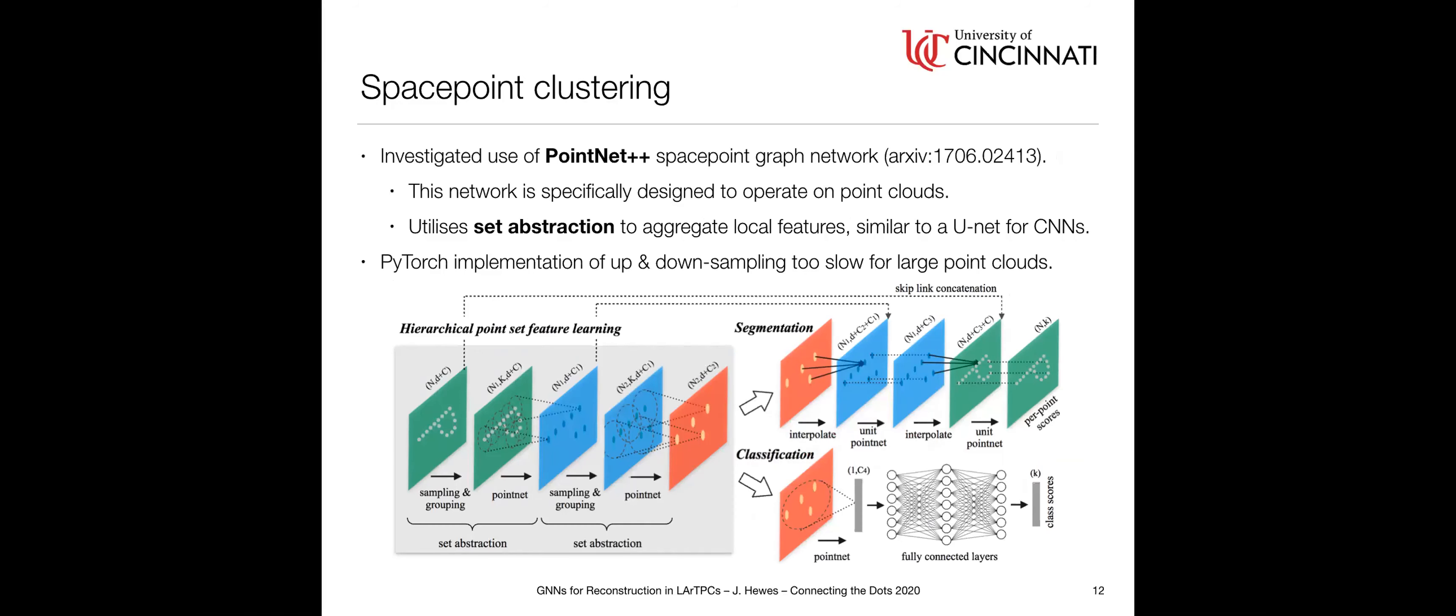For this technique, I looked into PointNet++. The first technique we were emulating what the Heptrix collaboration had done, whereas this network is more geared towards operating on point clouds. It utilizes what's called set abstraction to sample the point cloud to aggregate local features and pick out features of larger and larger distance scales similar to what a U-Net does. Ultimately, I found that the implementation of this in PyTorch, the set abstraction and feature propagation, is very slow for large point clouds. I spoke with the author of PyTorch Geometric, and it seems like this isn't a fundamental limitation, it's just not optimized computationally. But for the time being, I found this wasn't particularly efficient to use for the applications we were looking into.